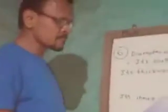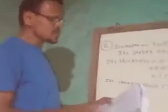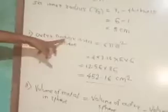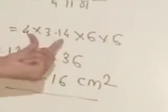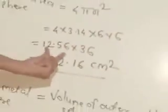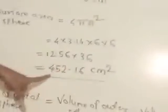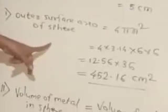We have to find two answers. First find the outer surface area, therefore outer surface area of the sphere 4 pi R1 square. 4 into 3.14 into 6 into 6, these two multiplications, 12.56, 16 into 6, 36, therefore 452.16 cm square. It is the first answer, outer surface area of the sphere.